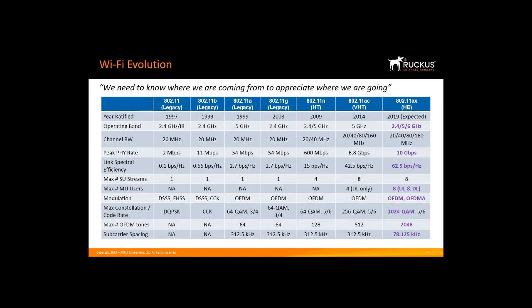Before discussing 11ax, let's briefly take a little trip to the evolution of Wi-Fi. 802.11 has evolved over the past 20-plus years. People have been working on this since the early 1990s. The first standard was published in 1997, and 20 years later we are getting ready to ratify 802.11ax. It has not yet been ratified, but just like what happened in the past, as a new standard is approaching ratification, products are manufactured and sold before the standard is ratified.